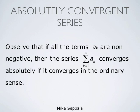Observe that if all the terms ak are non-negative, then their absolute values are the terms themselves, and in that case the series summation k from 1 to infinity of ak converges absolutely if and only if it converges in the ordinary sense.